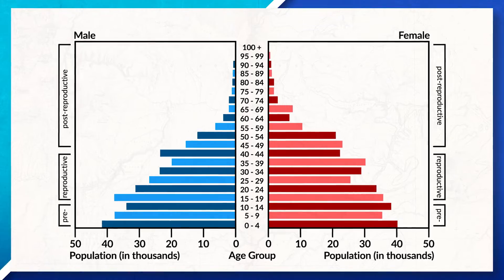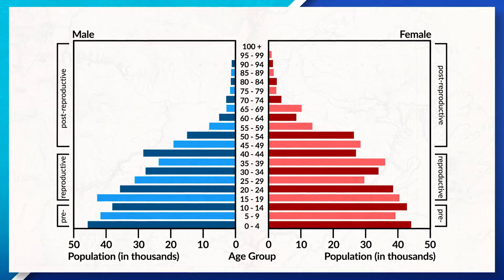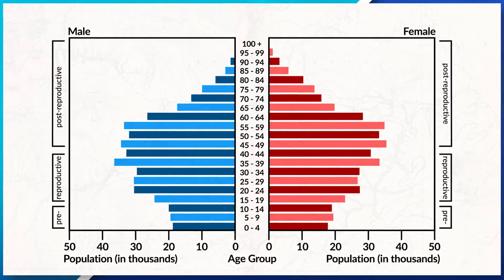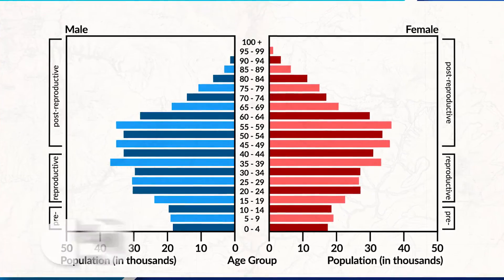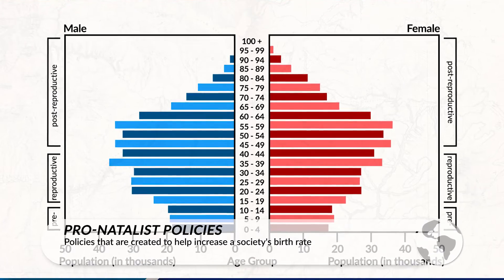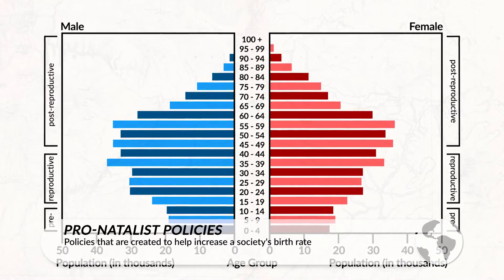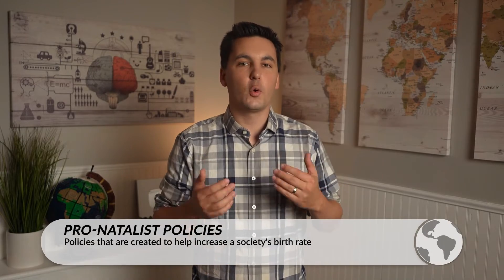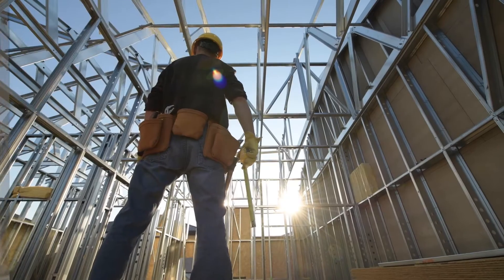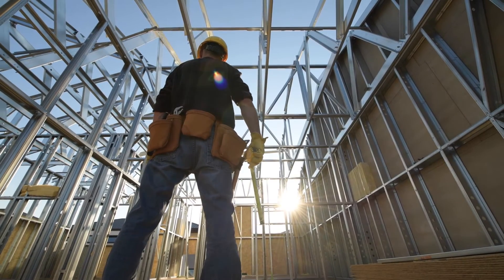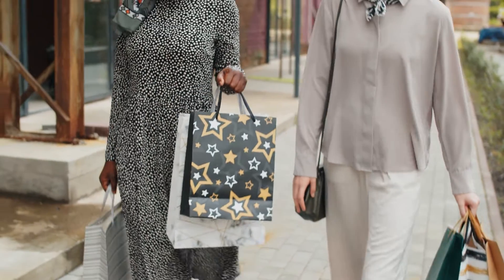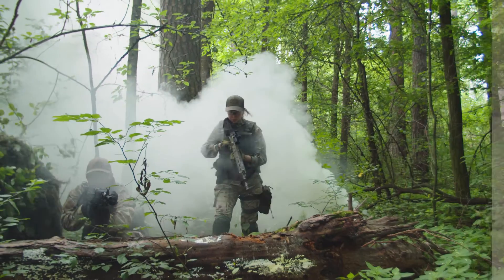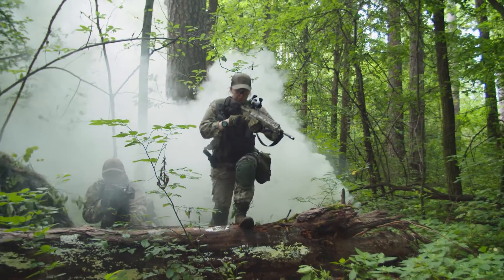This is especially true as populations move more into their post-reproductive years. This shift in age may push governments to implement more pronatalist policies as they try to find new ways to increase their NIR. If a government does not act quickly enough, they may not have enough essential workers, consumers to support certain businesses, a large enough tax base, or even enough people to serve in the military.